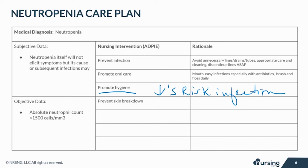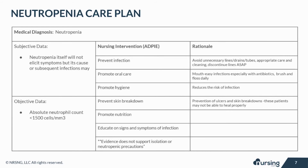Skin is super important in preventing infection. Therefore, if it is compromised, it can be a huge problem for a patient with neutropenia. Prevention of ulcers and skin breakdowns is key, as these patients may not be able to heal properly. Nutrition is another important nursing intervention because food that is not stored or prepared properly could cause infection. Listeria, for example, is a foodborne illness that could be detrimental to a neutropenic patient. There is no evidence that a neutropenic diet benefits these patients — instead, just following safe food handling guidelines set by the FDA is enough.